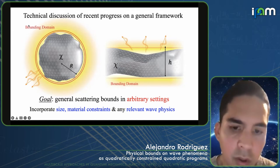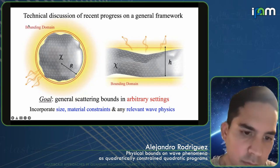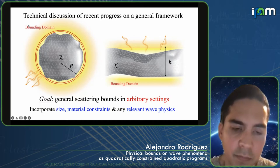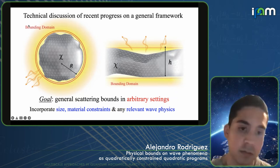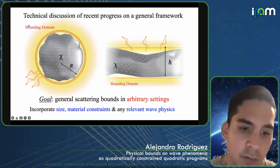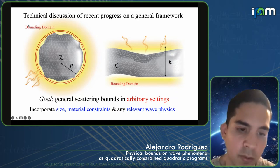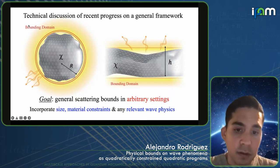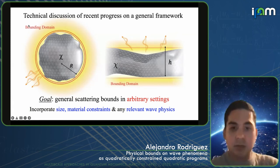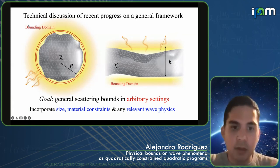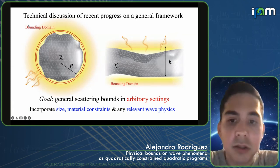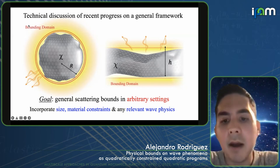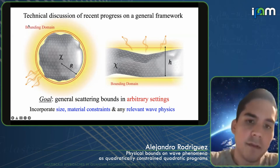The goal we set out to solve is to find general scattering bounds that apply to arbitrary settings — not just small or large domains — but that incorporate some notion of the size of the device, some bounding surface within which I confine my device, some material constraint on what the susceptibility is, and all of the relevant wave physics.